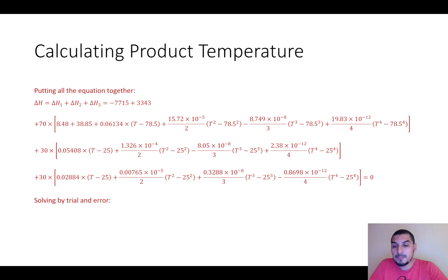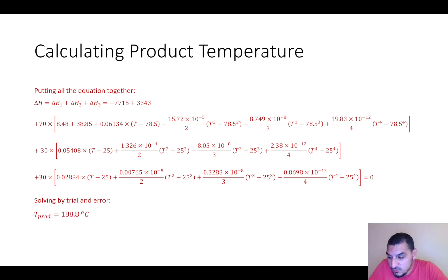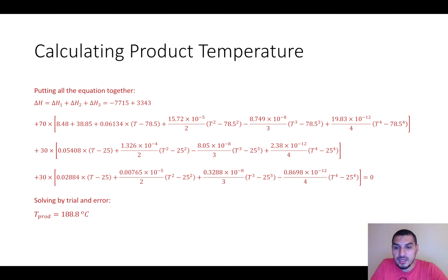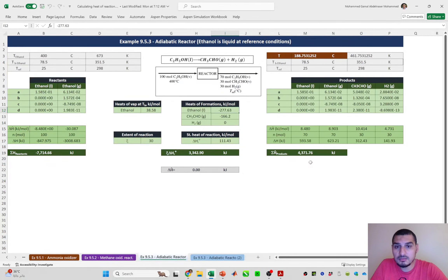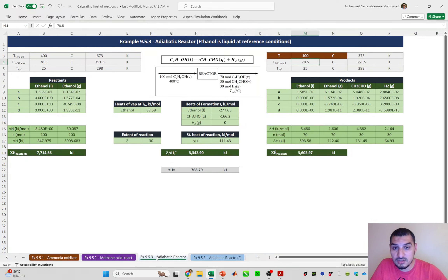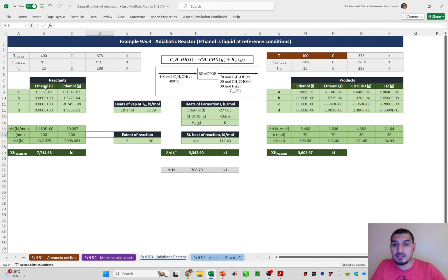After solving, the product temperature is found to be 188.5°C. As we did before with the heat exchanger problem, this can be solved efficiently using Microsoft Excel. I'll show the solution in Excel for both cases — the case where I assume ethanol is liquid at standard conditions, and the textbook case where it's assumed to be vapor.